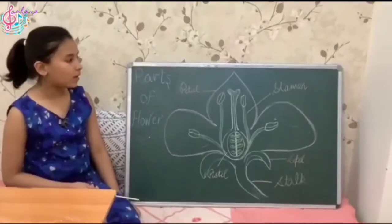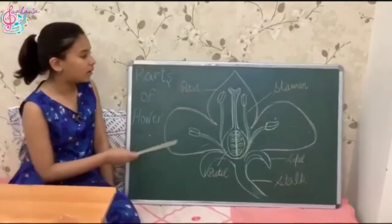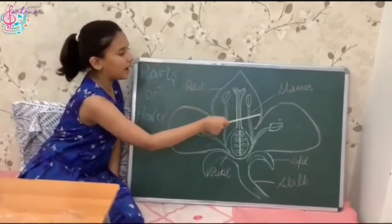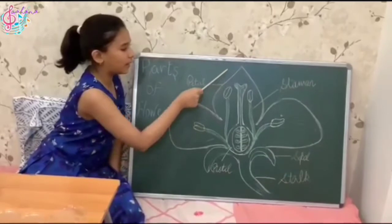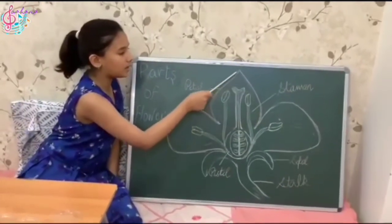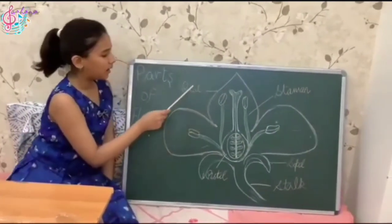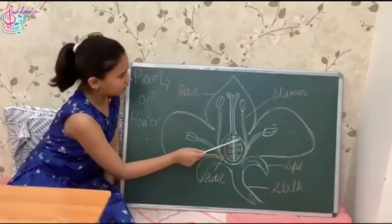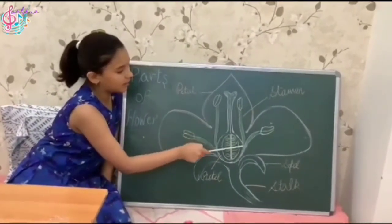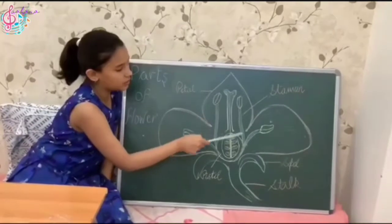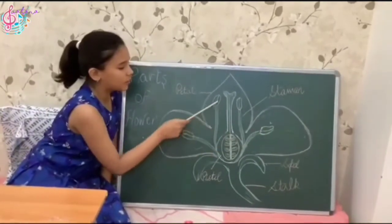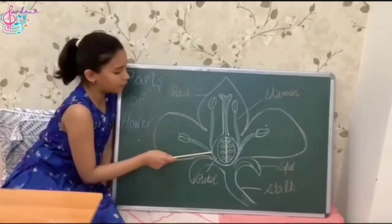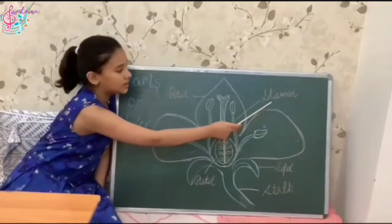First I will explain the main parts of a flower. These colored parts that are big and attract the insects are called petals. And then these thread-like structures which have pollen in them are the main part of the plant and are called stamen.